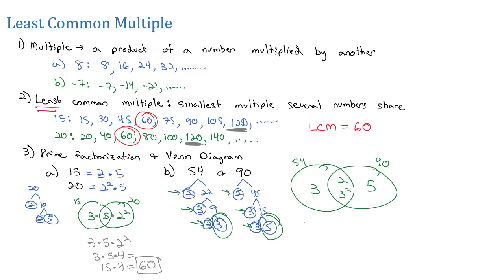And then to get the least common multiple, we multiply everything together. We have a 3 times a 3 squared times a 2 times a 5. Well, 3 squared is 9. 3 times 9 is 27. 2 times 5 is 10. Our least common multiple is 270.